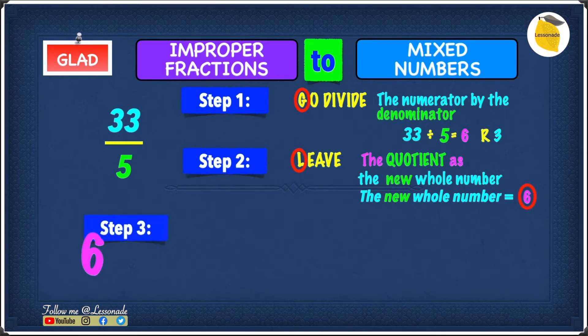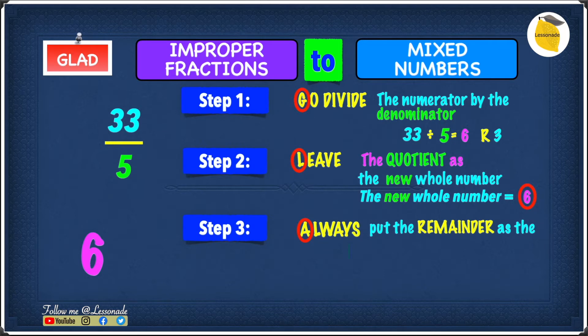Let's move to step 3. Step 3 is A, and A is always put the remainder as the new numerator. And the remainder is 3, so that means our numerator will also be 3. So now let's put the line and we have to find the denominator.